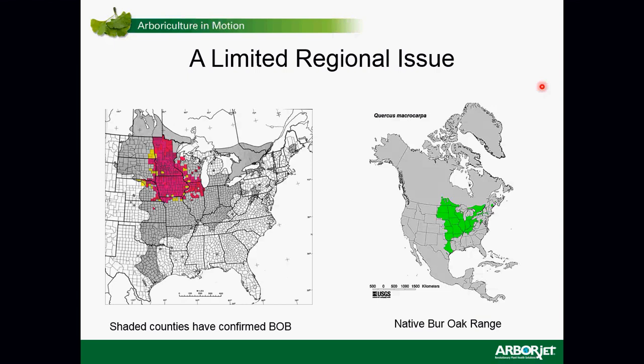It is a limited regional issue — it doesn't have national scope. The picture on the right shows where native bur oaks grow: primarily the center of the country through Minnesota, down through Missouri, over into Illinois, Indiana, and Ohio. The picture on the left shows where bur oak blight has actually been identified — the shaded counties — and it has also been identified in Arkansas. It's limited to about six or seven states in the Midwest.